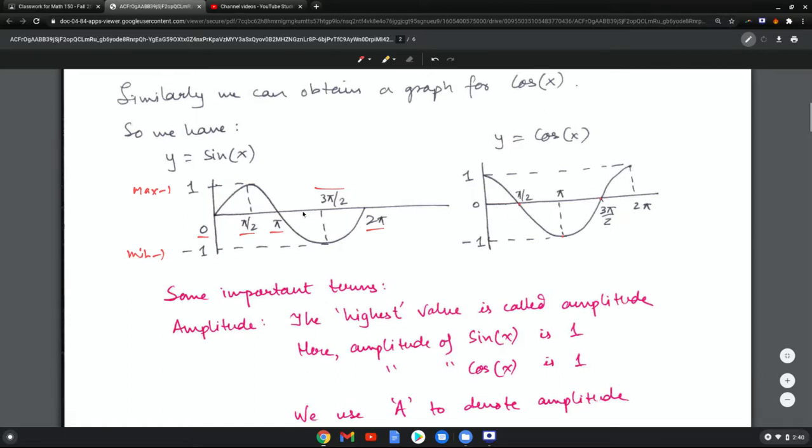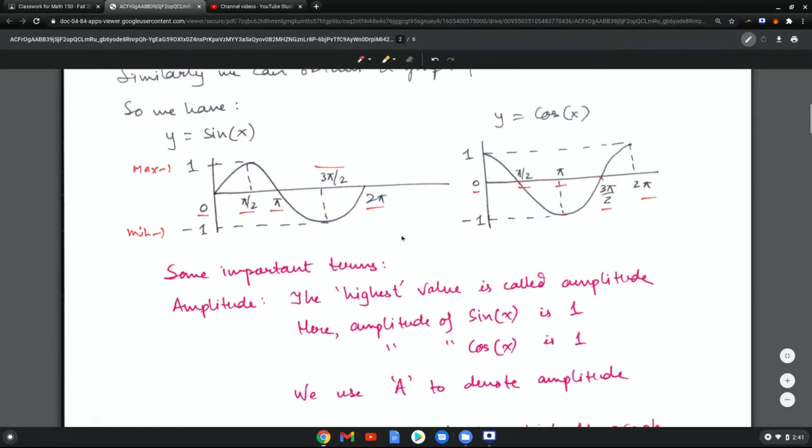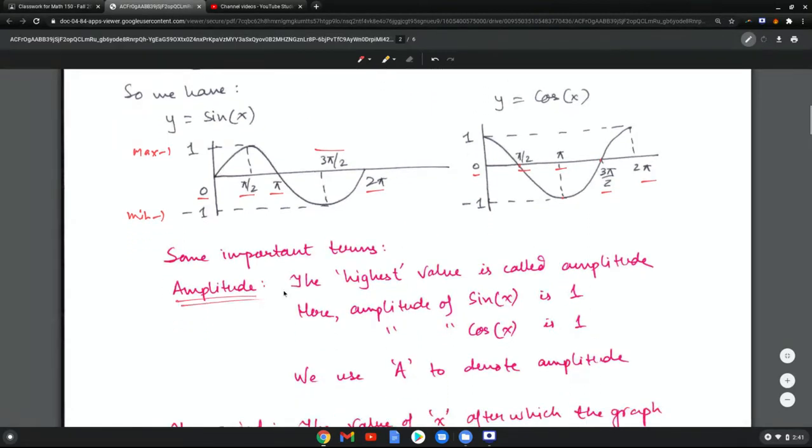It's a sine graph shifted slightly. Again, you have the same five points: 0, pi over 2, pi, 3 pi over 2, and 2 pi. Now there are some important terms we use when we talk about these graphs. Amplitude, that's the highest value. The amplitude of sine and cosine both is 1. As you can see, the highest value is 1. We use A to denote that.